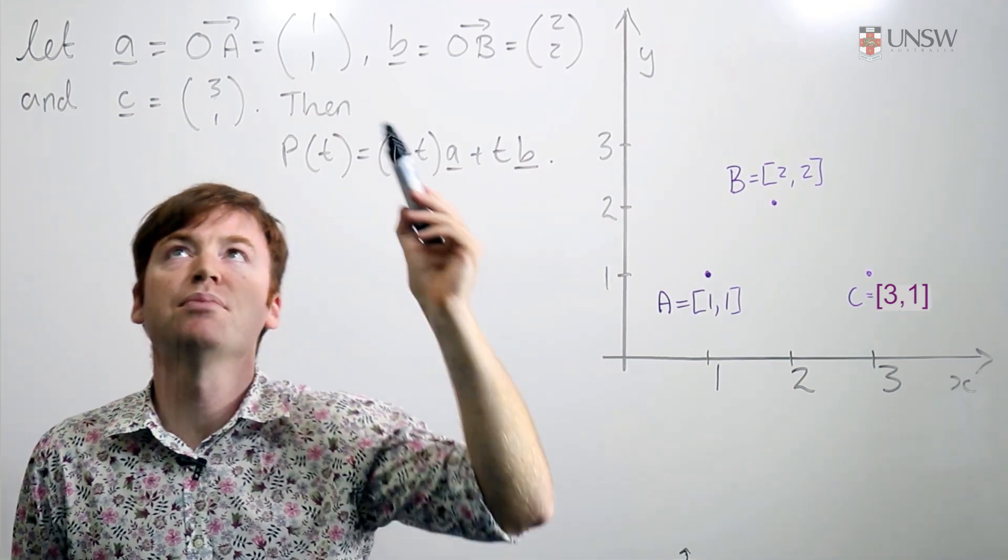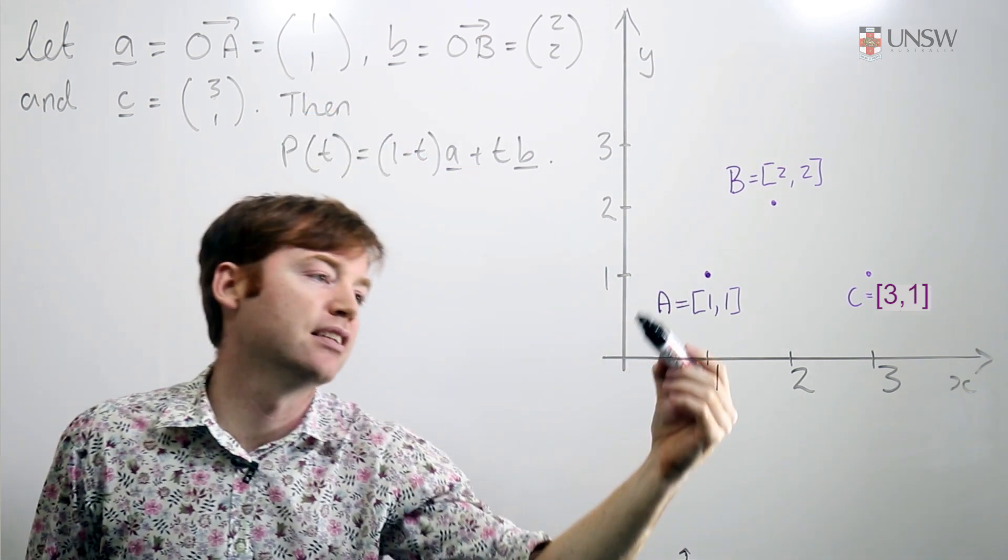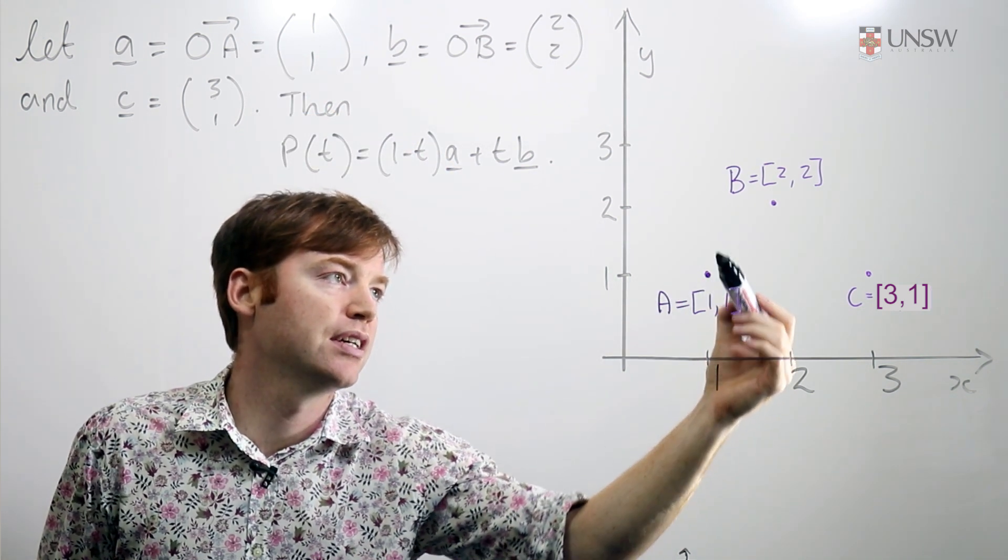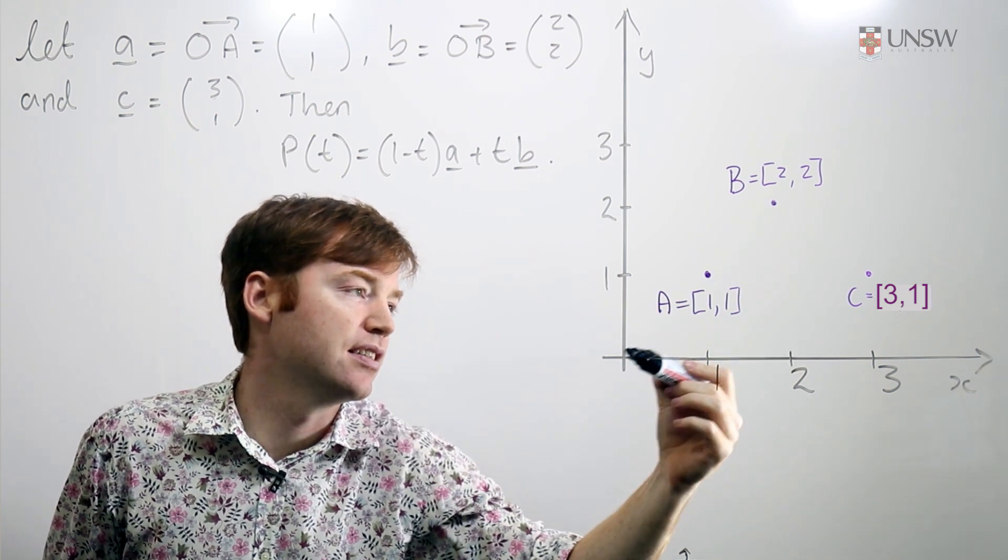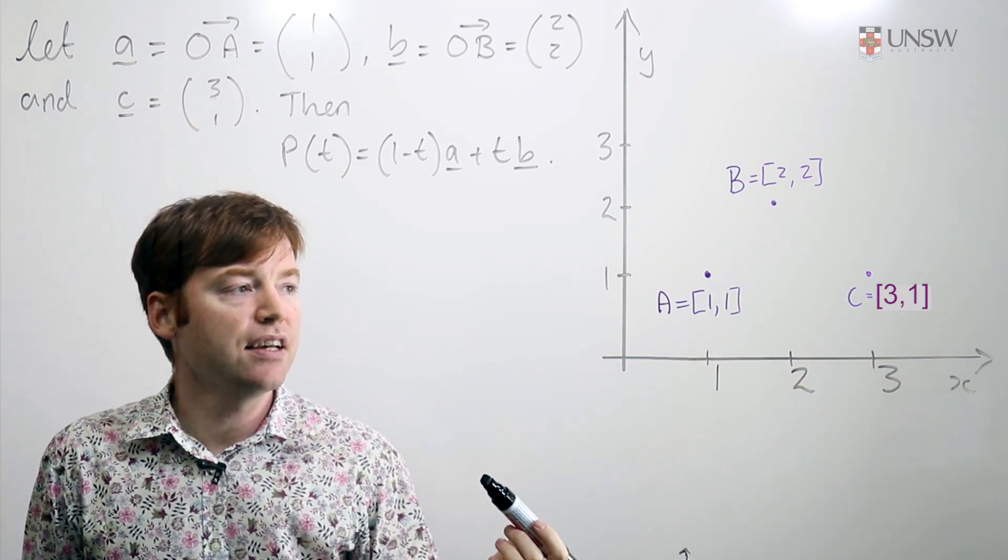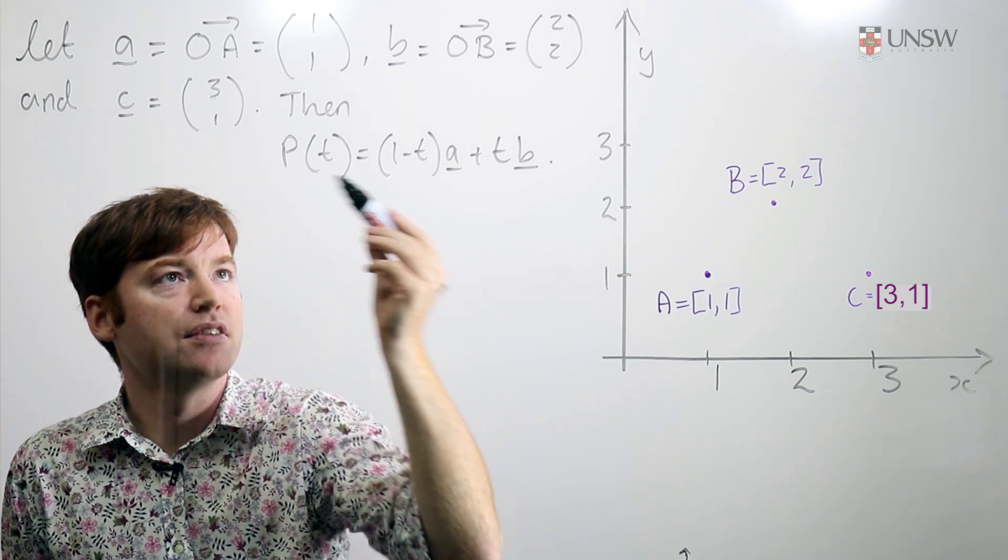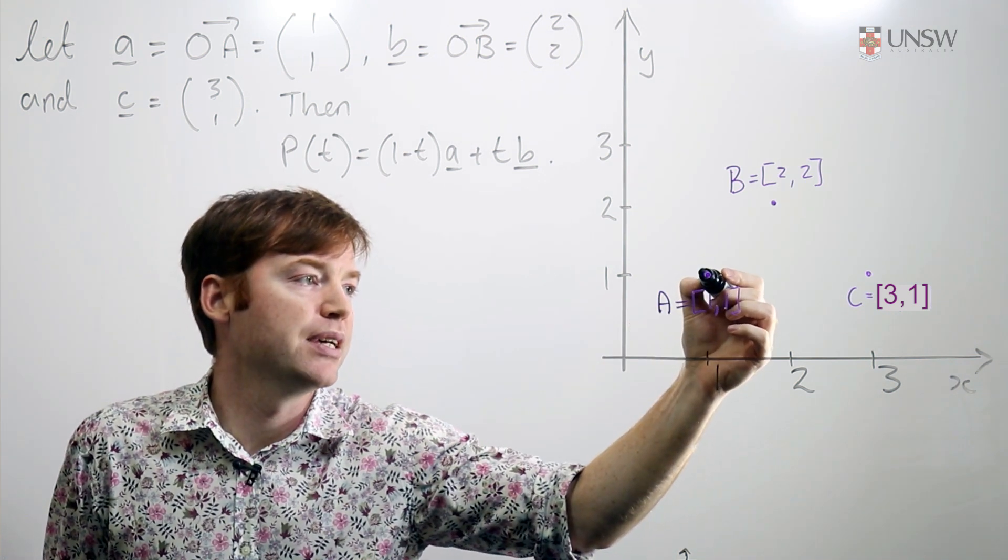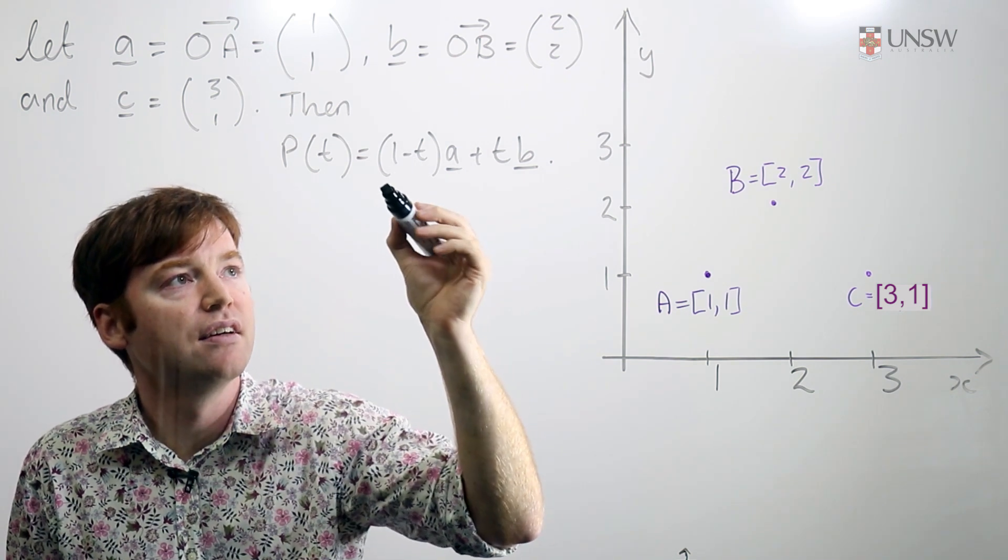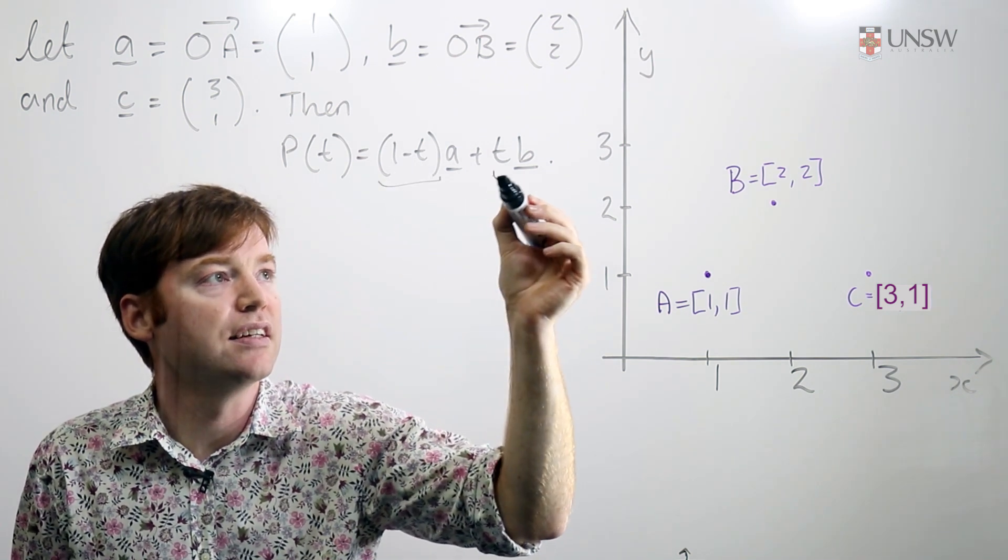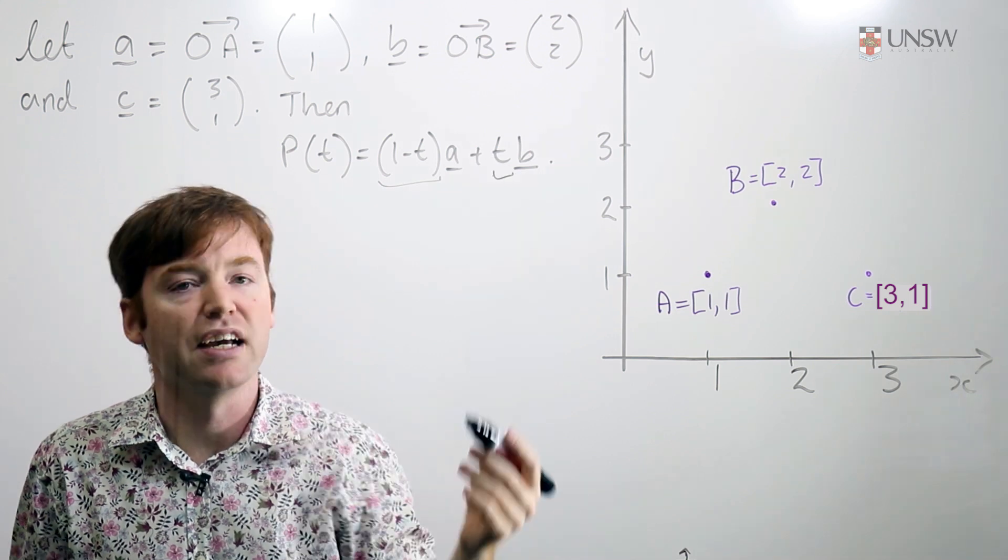First of all I've just defined some symbols. I'm going to let the vector a be the vector from the origin to this point, little b be that vector there, and c the vector to there. And that enables me to write this line here from a to b as p of t. You can think of these parts here, these bits out the front of the a and the b, as weights.